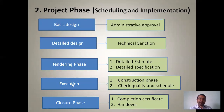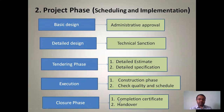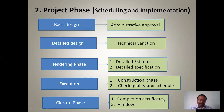The last part of the second phase is the closure phase. Here the project is completed and you have to obtain a completion certificate. Only after getting the completion certificate can you technically say the project is over. After completion, the project is handed over — for example, a contractor who has constructed an apartment gets the completion certificate and then hands over all the flats to their respective owners. This handover phase is the last part of the project phase.